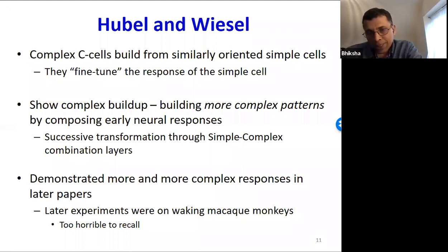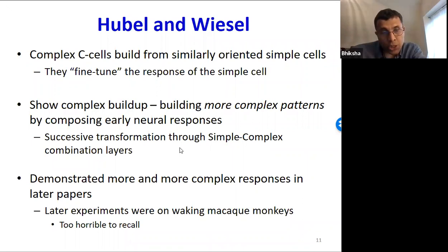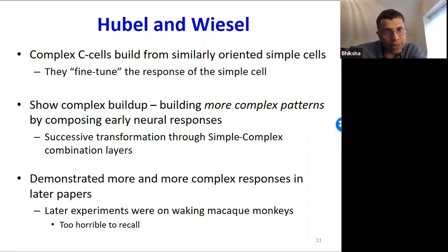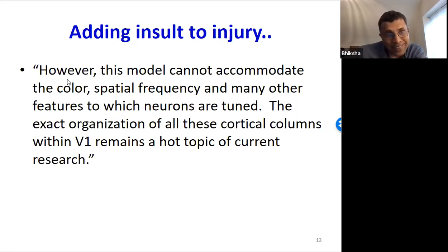This was Hubel and Wiesel's experiment in the 1950s, studying how the mammalian visual system actually responds. They had to sacrifice many cats, then went on to sacrifice monkeys for even more experiments. Adding insult to injury, they later concluded that their model was perhaps not quite right — it cannot accommodate color, spatial frequency, and many other features to which neurons are tuned. The exact organization of cortical columns within V1 remains a hot topic of current research.